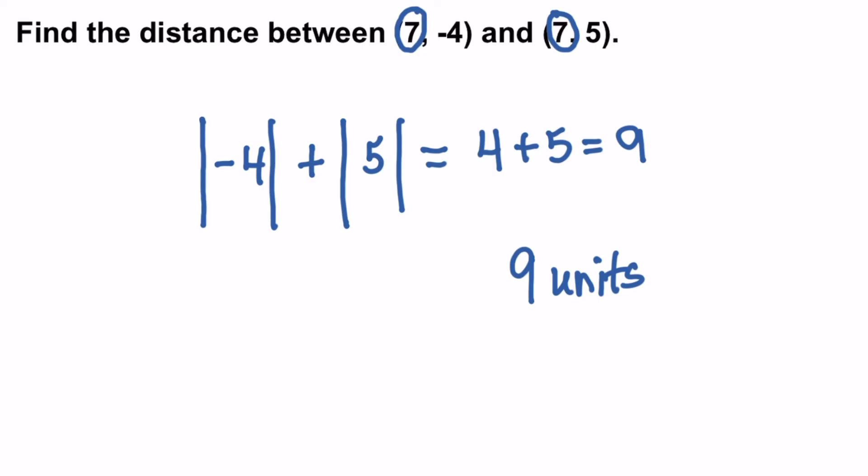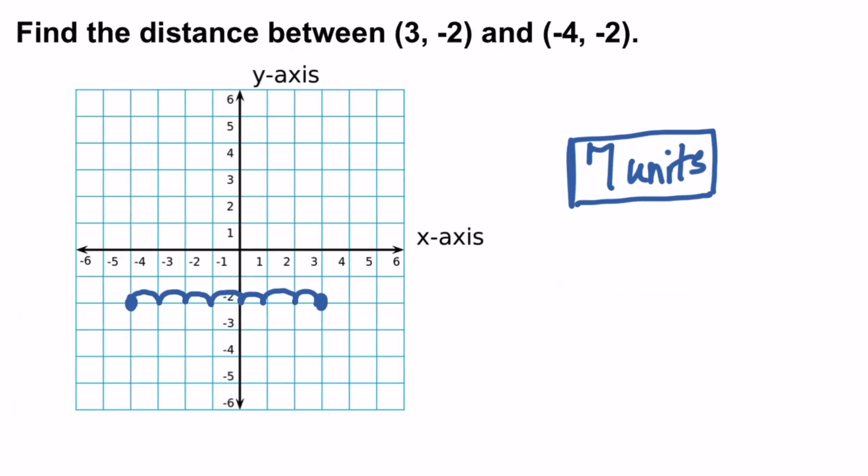Okay, now let's go back, just to make sure we are clear. We could have done the same thing here for this example. We see here that the y coordinates are the same. So in order to calculate the distance, I can do the same thing. I can say the absolute value of 3, plus the absolute value of negative 4. And then I rewrite the problem as both positive numbers, 3 plus 4, and I get 7 again.